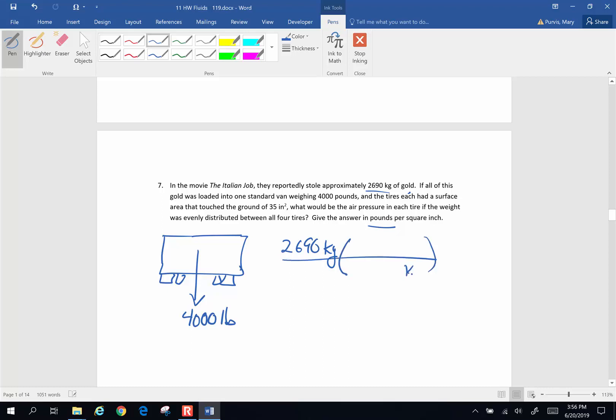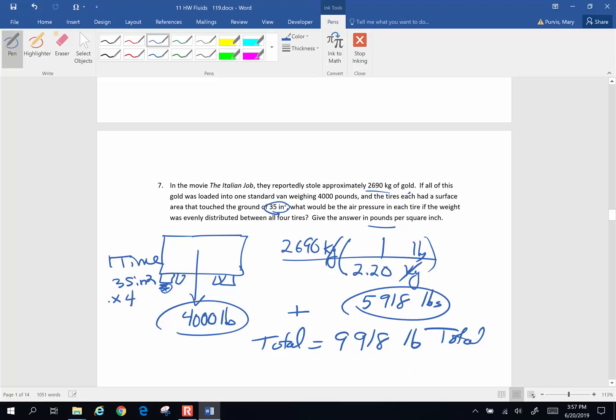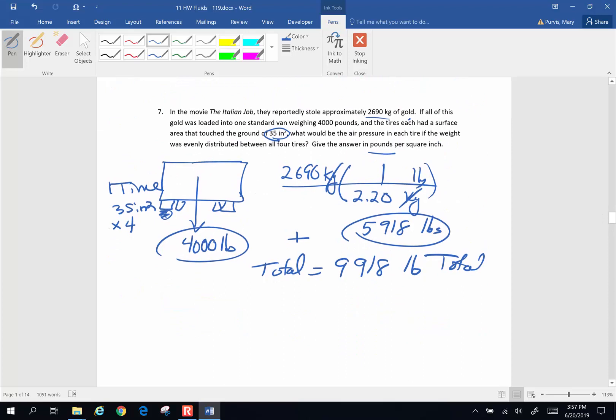So the total weight of the van plus the gold is going to be 9,918 pounds total. Now if that's my total weight, it's going to be distributed over four tires. Each tire is going to have 35 inches squared touching the ground. But we have four tires.